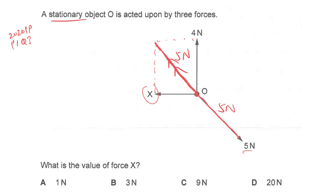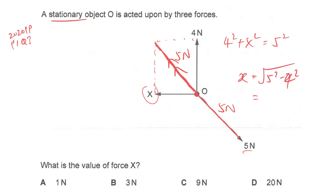To find X, apply the Pythagorean theorem: 4 squared plus X squared equals 5 squared. Therefore X equals the square root of 5 squared minus 4 squared, which gives 3 Newton — answer B. Watch the next video where there are questions involving vector diagrams without physically drawing them.